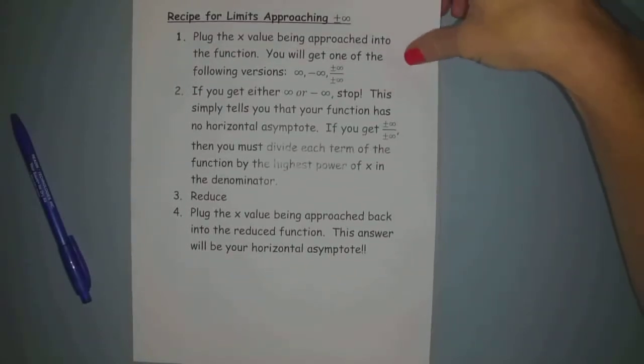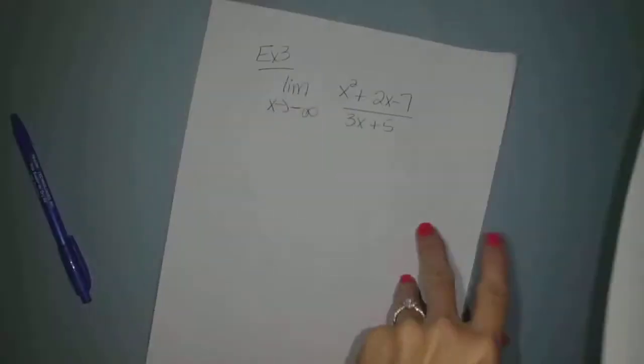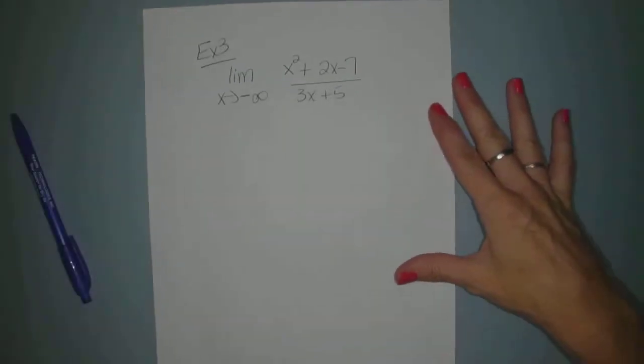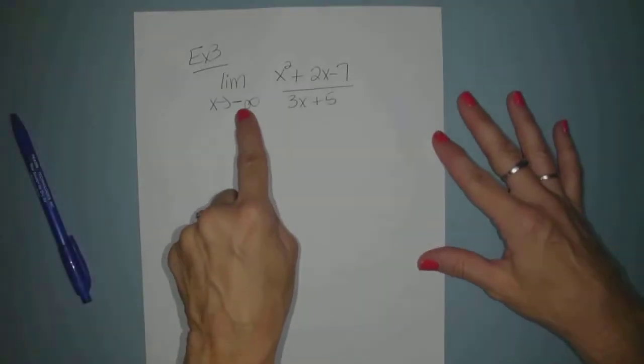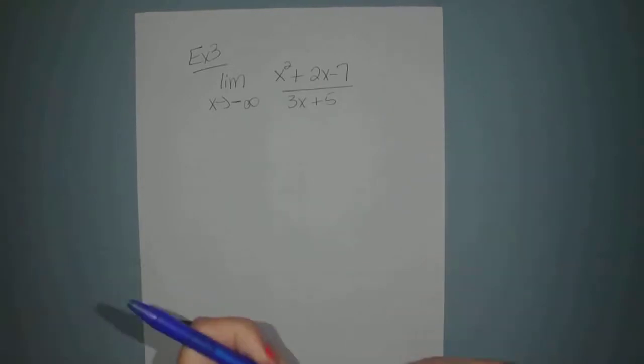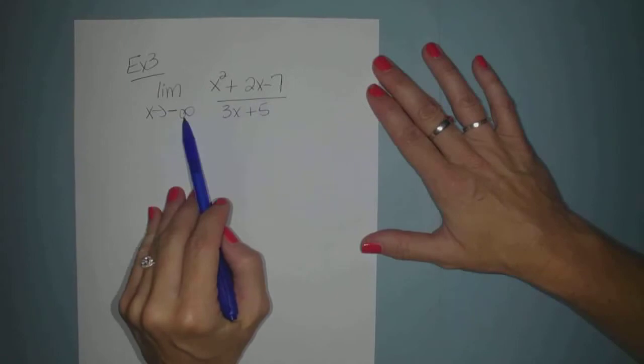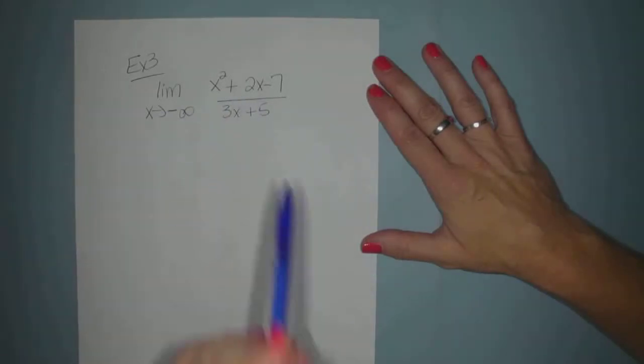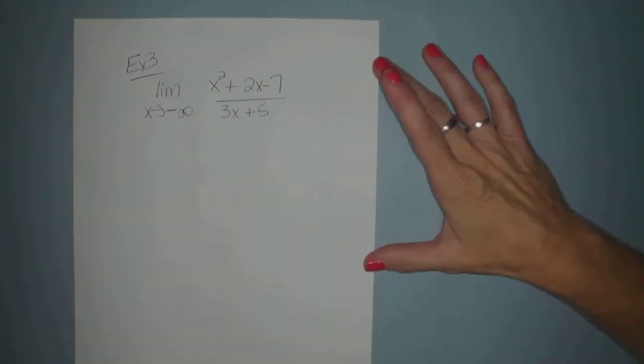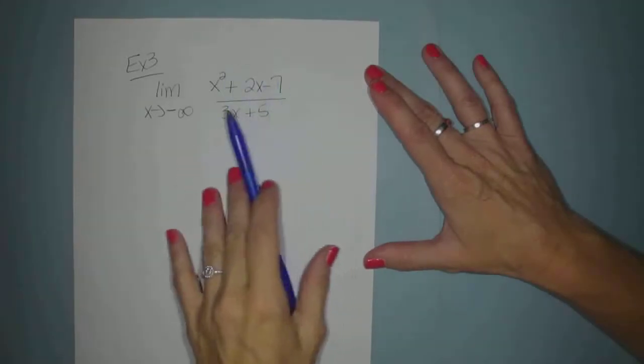And I just want to do one last example here. I got cut a little short on my last video, so one more example. I wanted to do one approaching negative infinity. So let's take a look at it. Following the recipe, we're going to find the limit as x approaches negative infinity of x squared plus 2x minus 7 divided by 3x plus 5, another rational function.